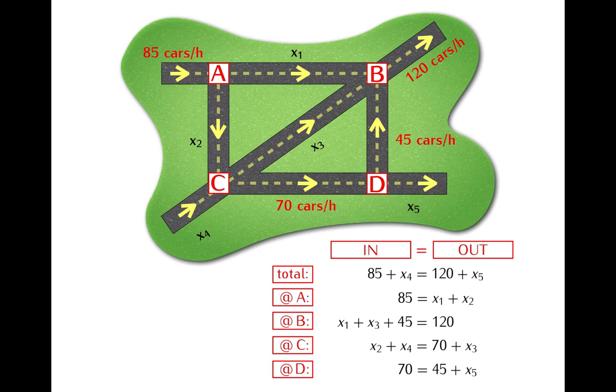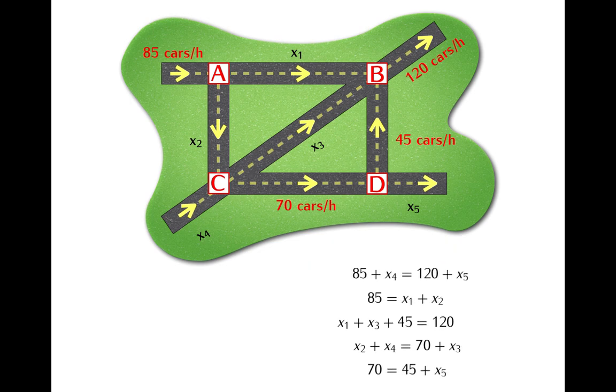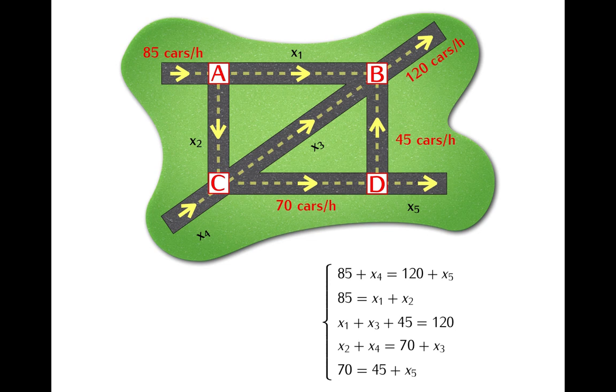As you see we obtain then a system of equations in five variables and what we need to do next is to find solutions of this system. As the first step we will rewrite this system so that all variables are on one side of these equations and constants are on the other side. And once we do it this system will look like this.